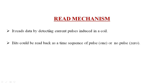The read mechanism reads the data by detecting the current pulses in the coil. The bits could be read back either as a time sequence — pulse or no pulse. If it is a pulse, it is called one. If there is no pulse, then it is called zero. These are the read mechanisms of the disk.